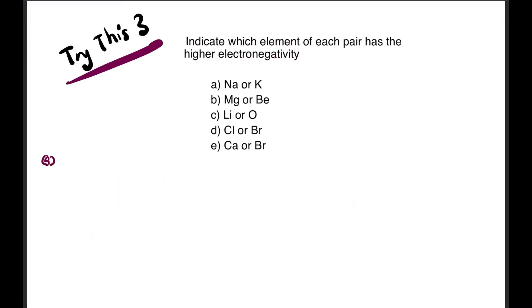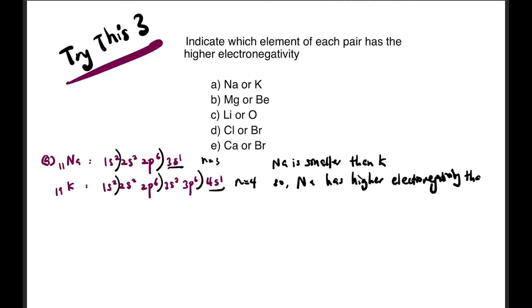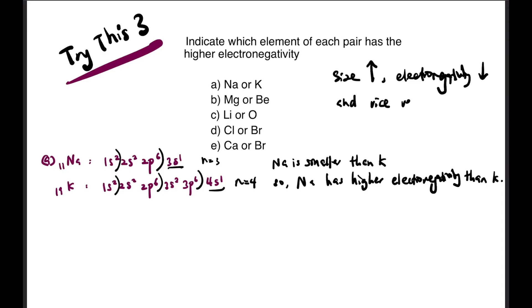Try this question: indicate which element of each pair has the higher electronegativity. The key is the same — write the electronic configuration first. Na: 1s² 2s² 2p⁶ 3s¹. K has atomic number 19: 1s² 2s² 2p⁶ 3s² 3p⁶ 4s¹. From the electronic configurations, N equals 3 for Na and N equals 4 for K. So Na is smaller than K. Since Na is smaller than K, Na has higher electronegativity compared to K. For further explanation, refer to the NSAS factors. In summary: larger size means lower electronegativity; smaller size means higher electronegativity. For the rest of this question, since we want higher electronegativity, we identify which element has the smaller size.